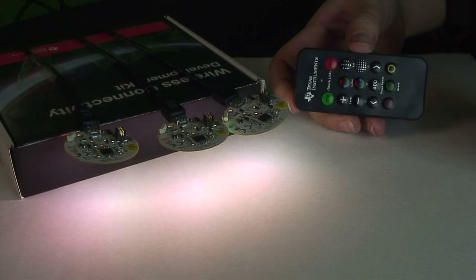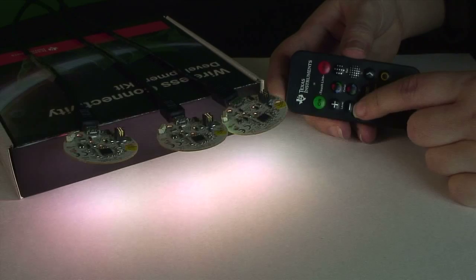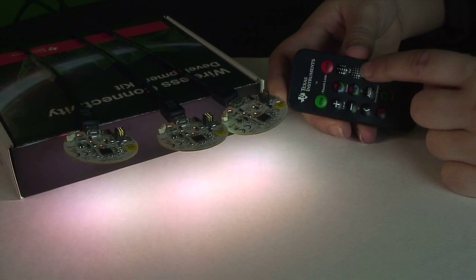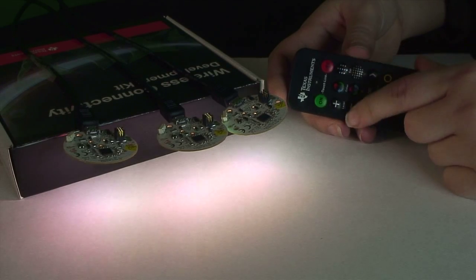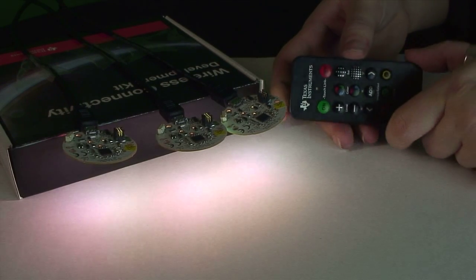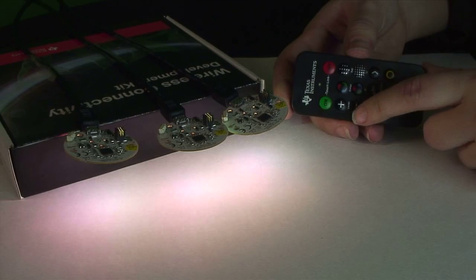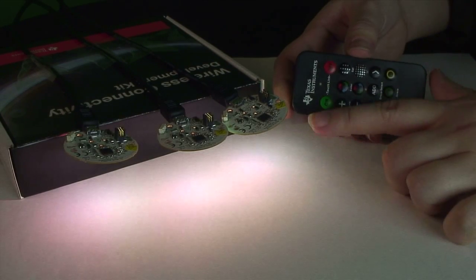Now I am going to show you the functionality with the remote. On your remote you have choices of level, color and saturation. You can increase and decrease each one of these. To increase it is always the top and to decrease it is always the bottom. Level is your intensity so you can go up and down to have this be brighter or lighter.